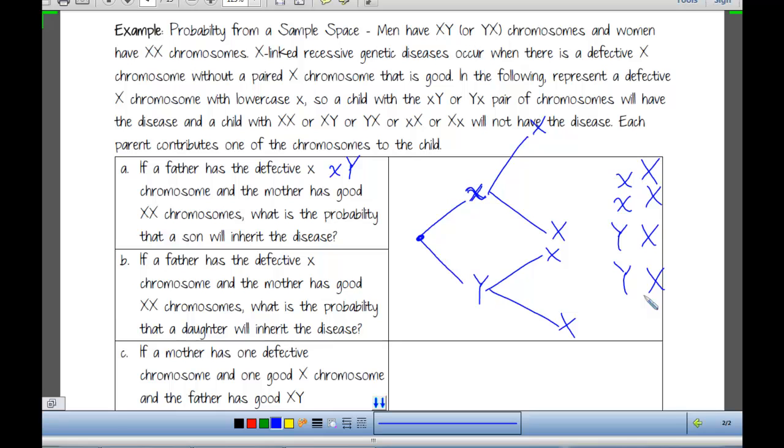That's the next part is, first of all, we've got to figure out what is the probability that a son will inherit the disease, so here we only have two that are sons, right? And so the probability that the son inherits the disease would be what? Zero. Very nice. Questions about that?